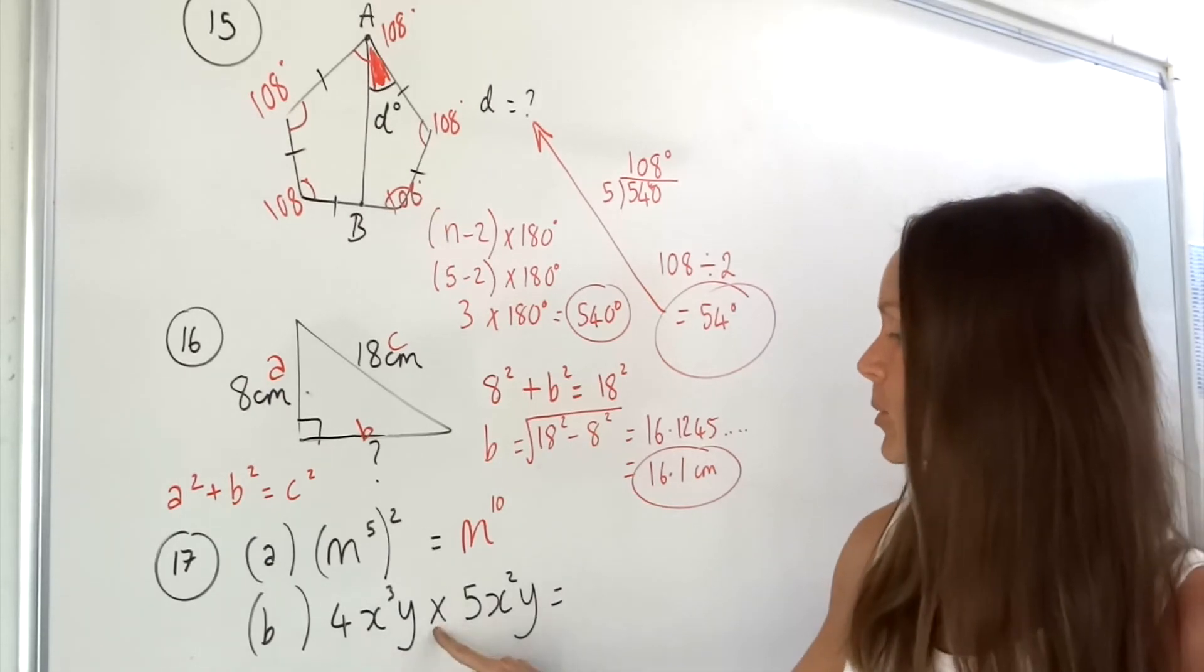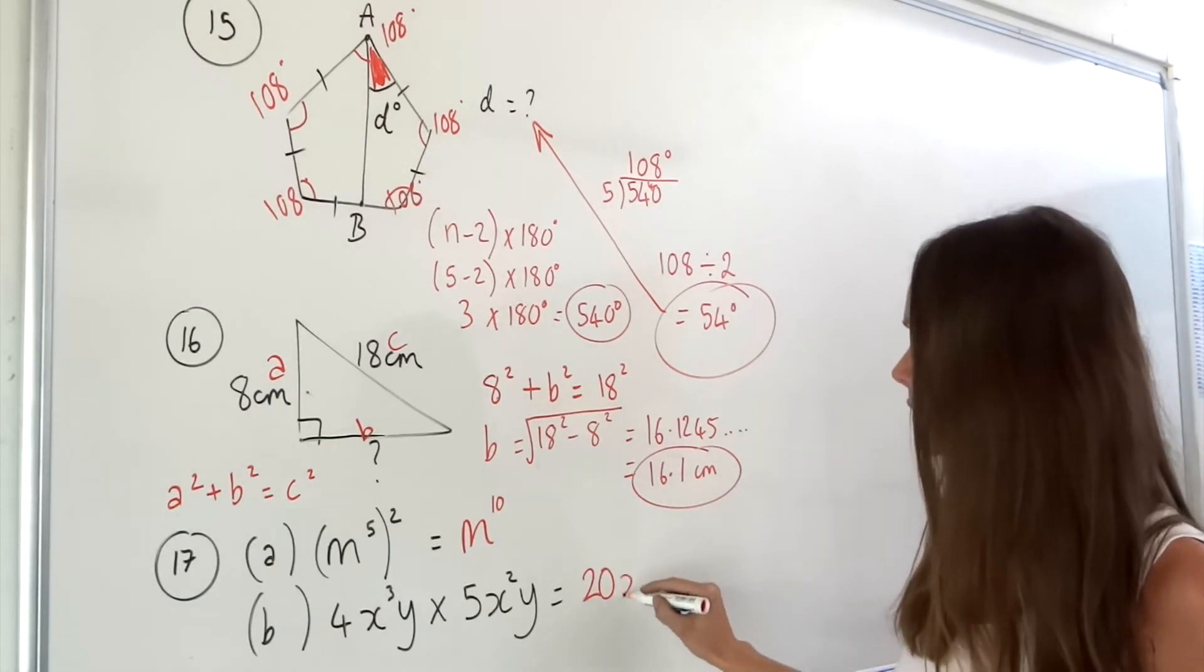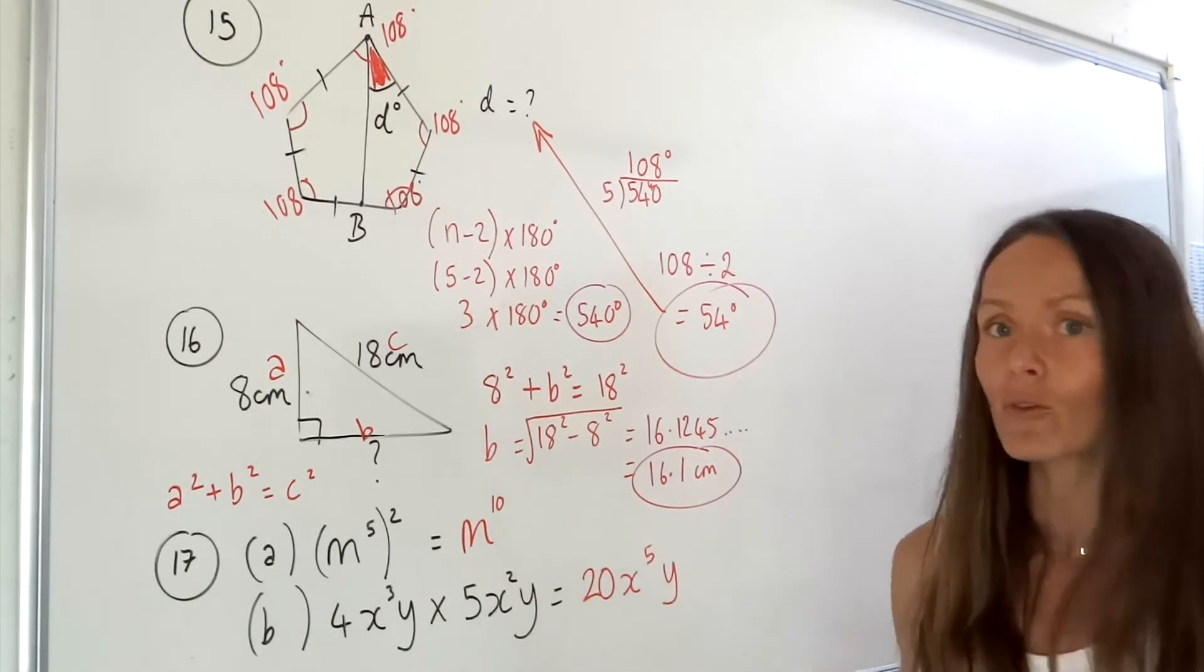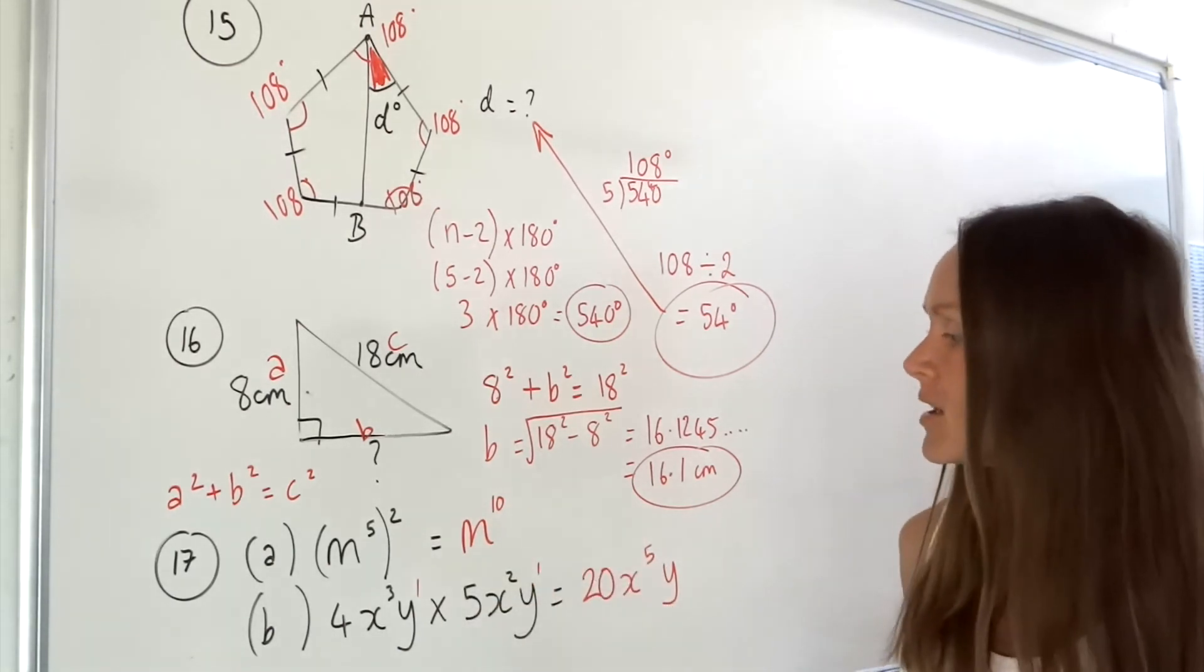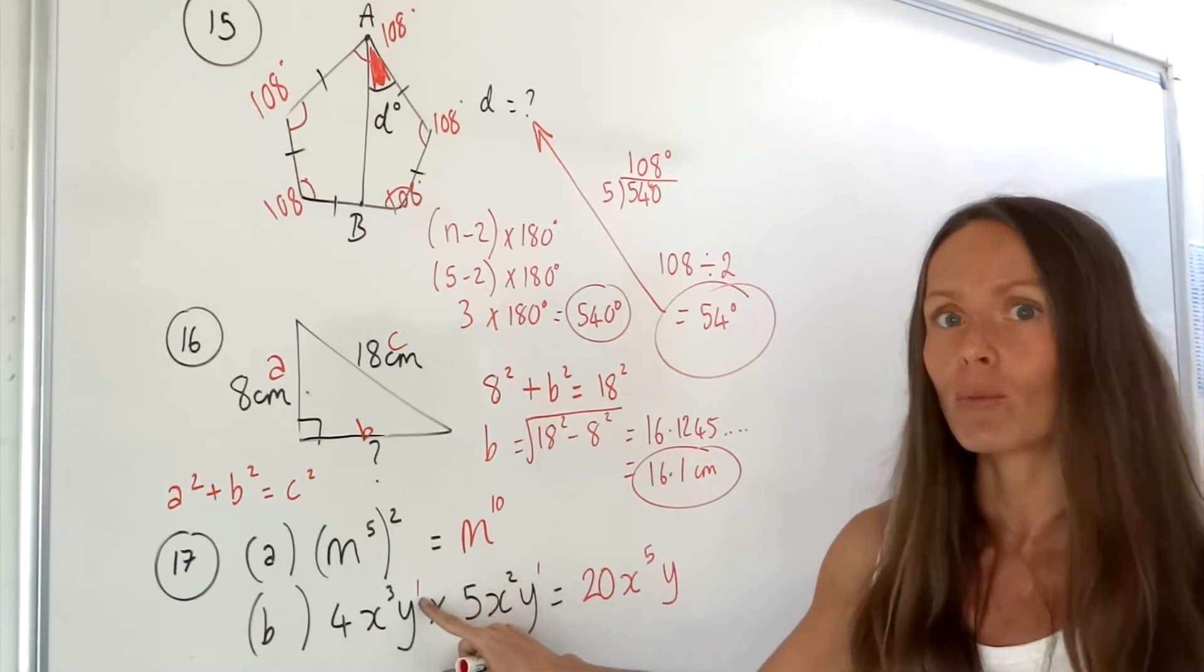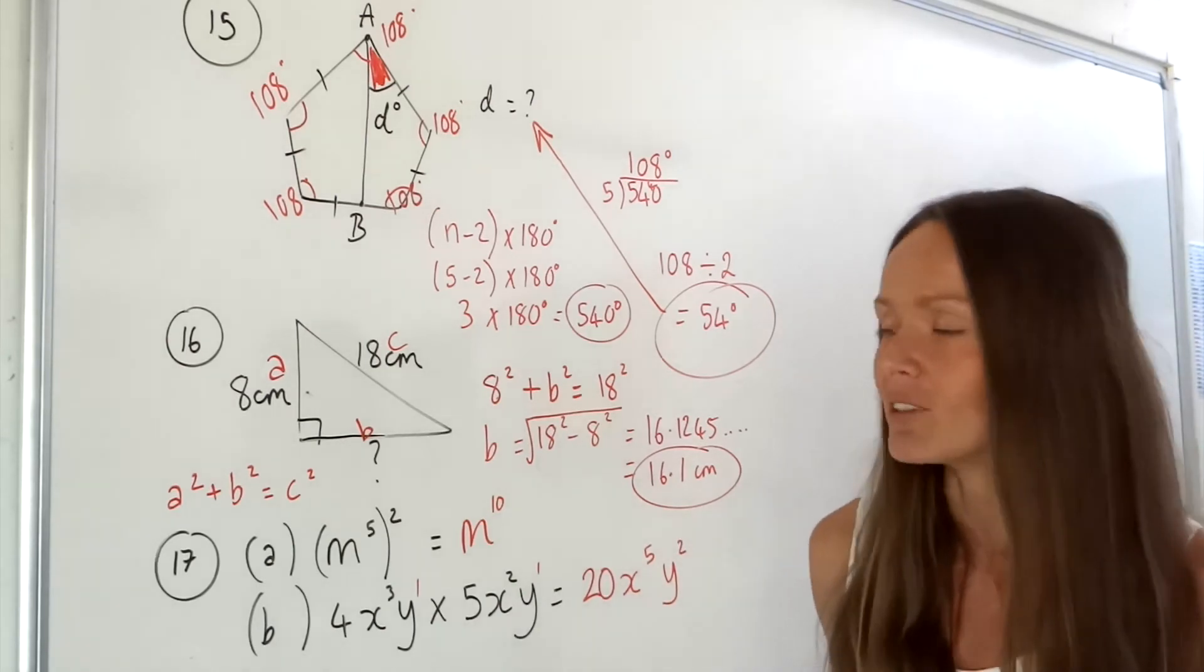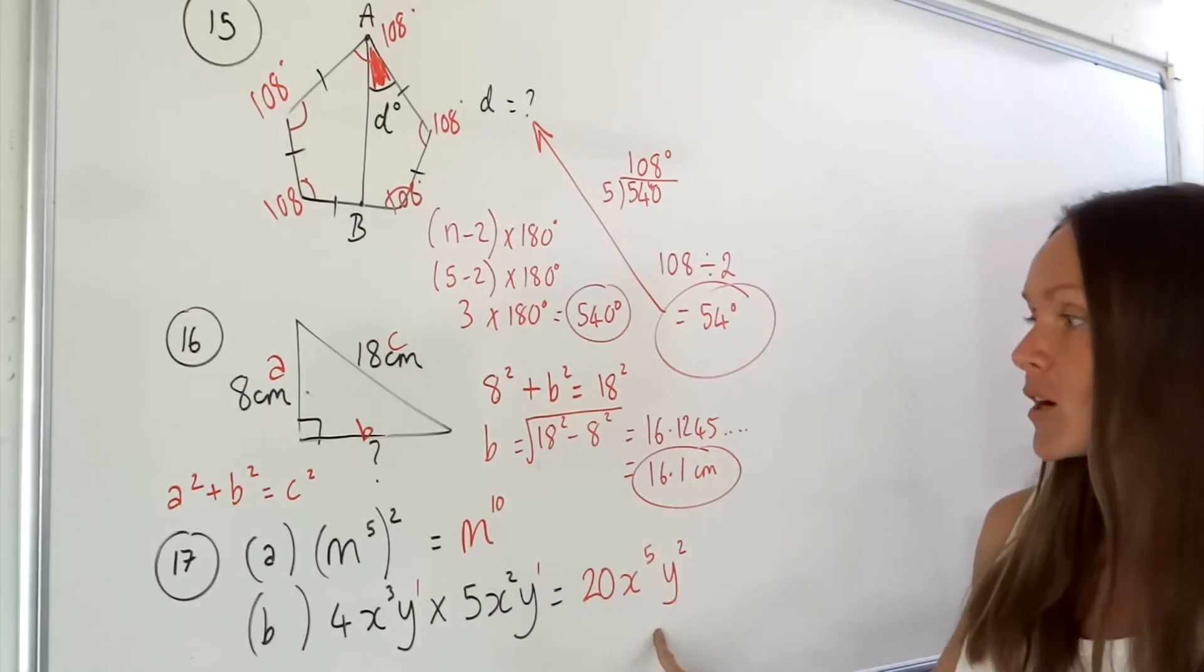To start with we just multiply the two numbers just as you normally would, so four multiplied by five is twenty. If we look at the x values we need to add the powers, so three plus two is five. Then if we look at the y values, you have to remember that y is the same as y to the power of one. When I multiply the y values together and I add those powers, one plus one is two, but you probably already knew that y times y is y squared. That's the final answer for number 17.